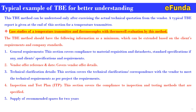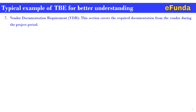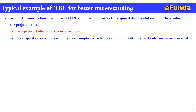Fourth, inspection and test plan, ITP — this section covers compliance to the inspection and testing methods that are specified. Fifth, supply of recommended spare parts for two years. Sixth, supply of recommended commissioning spares. Seventh, vendor documentation requirement — this section covers the required documentation from the vendor during the project period. Eighth, delivery period — delivery of the required product to the site. Ninth, technical specification — this section covers compliance to all the technical requirements of a particular instrument or entity specified as part of the material requisition. This is how the details of the TBE are covered.